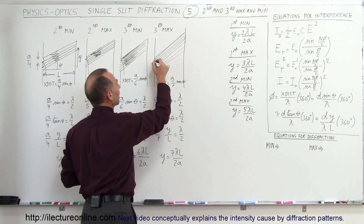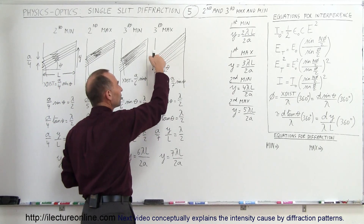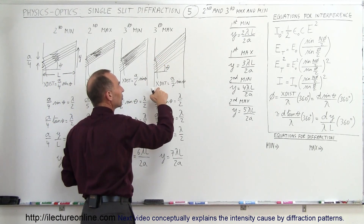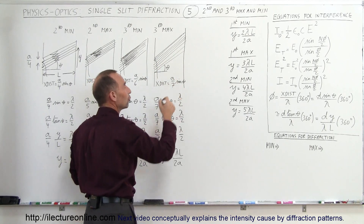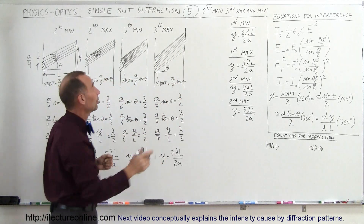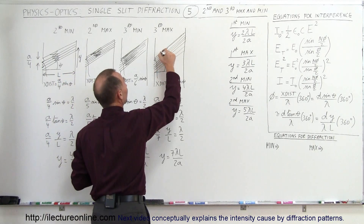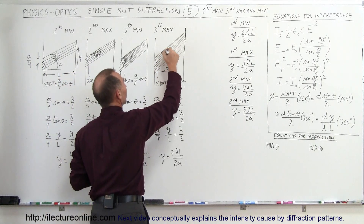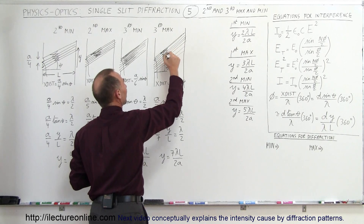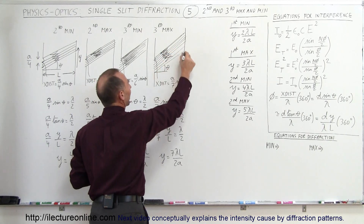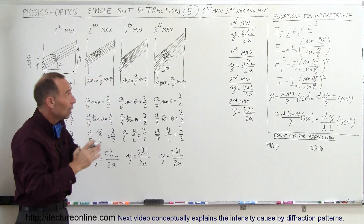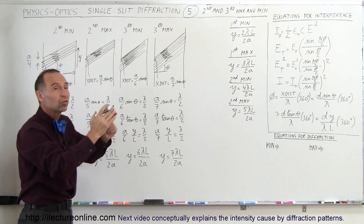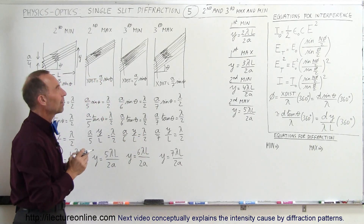If we angle it a bit more so theta becomes even larger, such that the extra distance is one-seventh into the beam — A over 7 times sine theta — set equal to lambda over 2, we again get destructive interference. The first one-seventh cancels out the second-seventh, the third-seventh cancels out the fourth-seventh, the fifth-seventh cancels out the sixth-seventh, but the last one-seventh of the beam still makes it to the screen, putting a small maximum there as well.